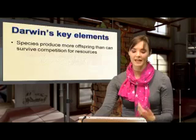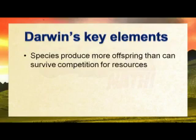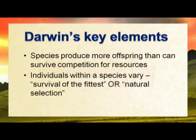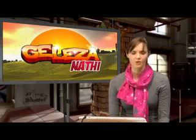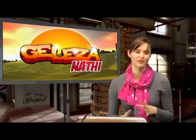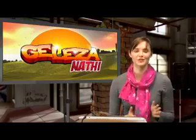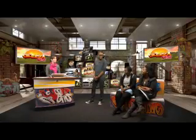Darwin's key elements were that species produced more offspring than they can survive because of the competition for resources. He also said individuals within a species vary. This is the whole idea of survival of the fittest or natural selection.